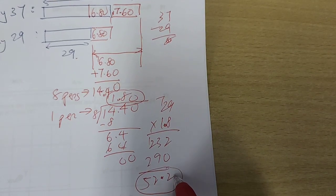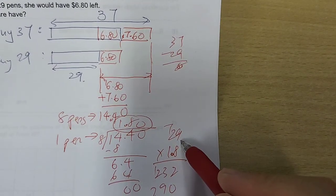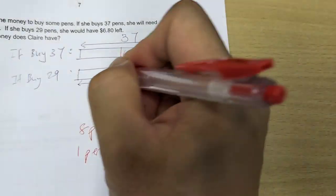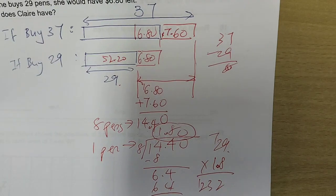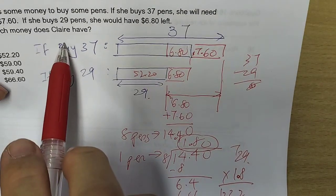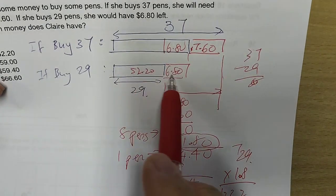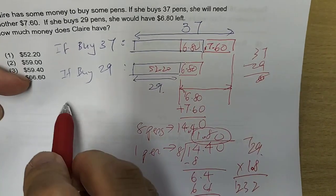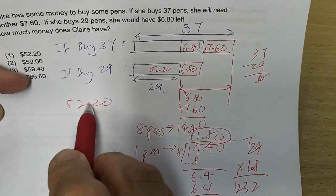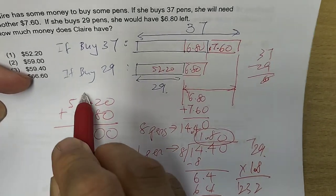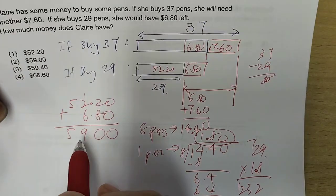Each pen costs $1.80. To buy 29 pens, this part of the model will be $52.20. So how much does Claire have at first? That will be what she needs to spend on 29 pens plus the money she has left. That will be $52.20 plus $6.80. $59.